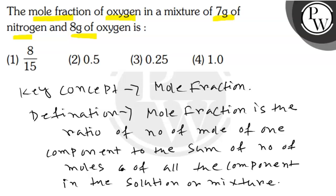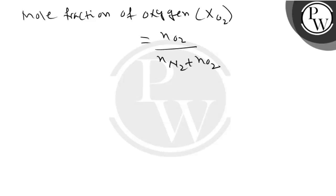In this case, we have to calculate the mole fraction of oxygen. X(O2) = n(O2) / [n(N2) + n(O2)], where n(O2) is the number of moles of oxygen.